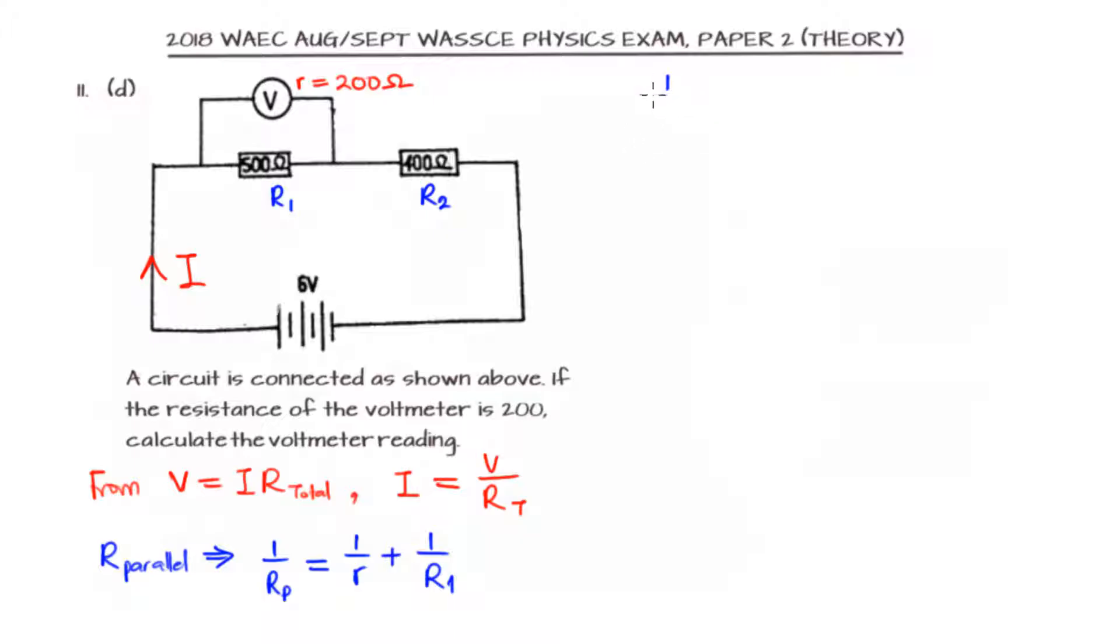So if we are to solve this, we can say 1 over Rp is equal to 1 over 200 plus 1 over 500. So for this we can easily find the LCM as 1000, then 200 into 1000 is 5, 5 times 1 is 5, plus 500 into 1000 is 2, 2 times 1 is 2.